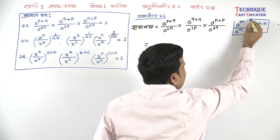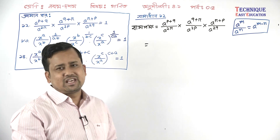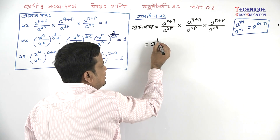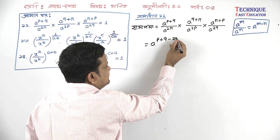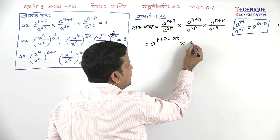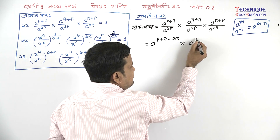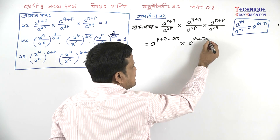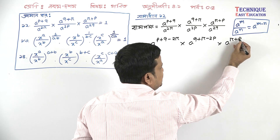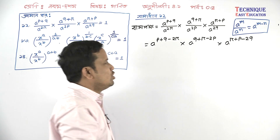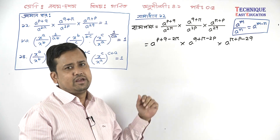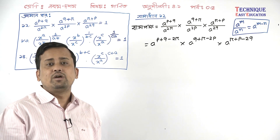Base A to the power minus A. We have expressions: q plus r minus 2p, then part minus r plus p minus 2q, and the corresponding exponent terms for A.